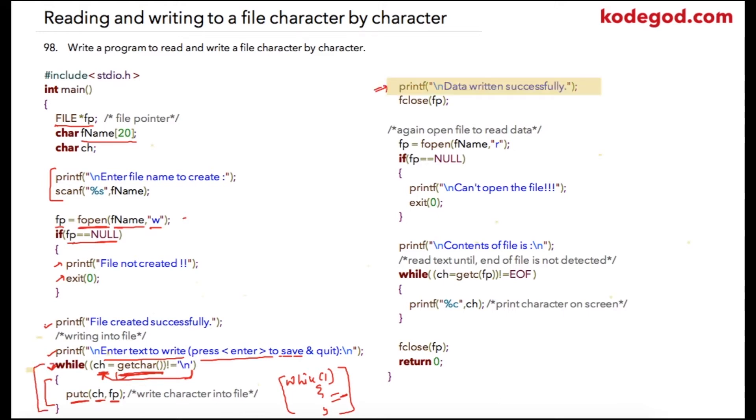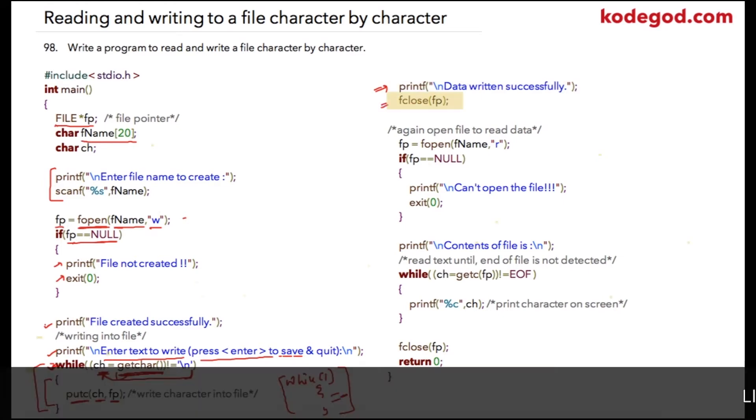So once we come out of this while loop we are just going to print that data written successfully to the file and we are going to use fclose. We are going to close the file that we have opened.